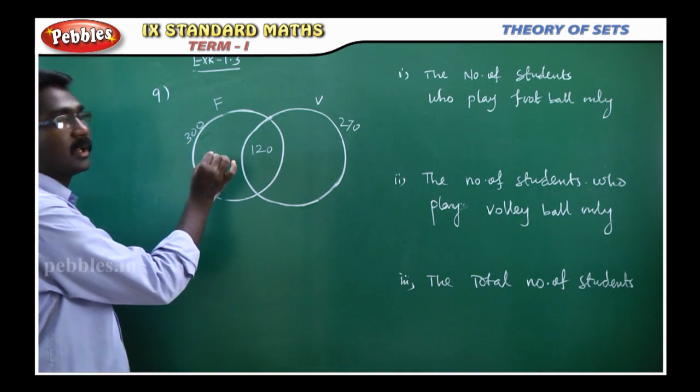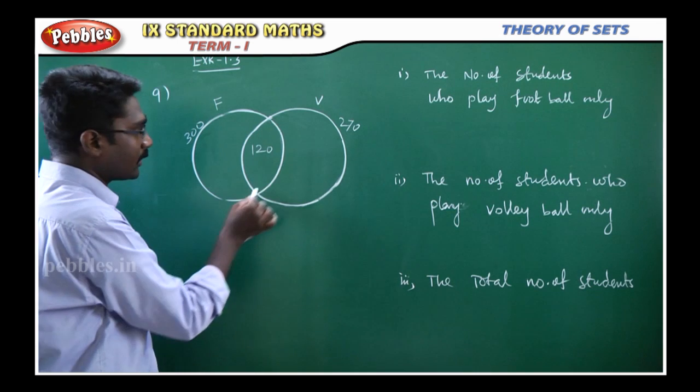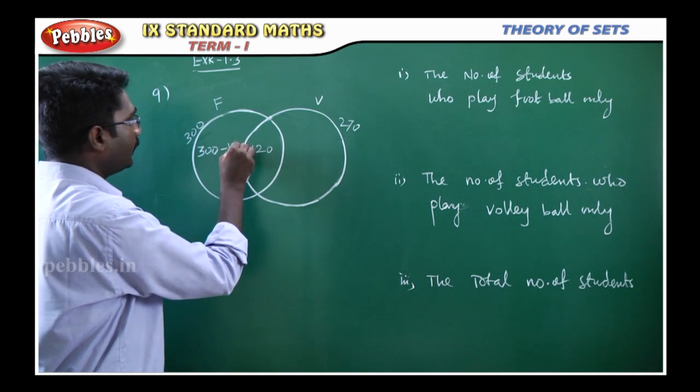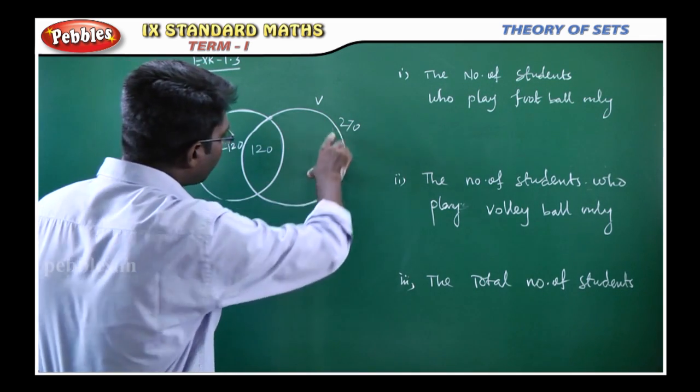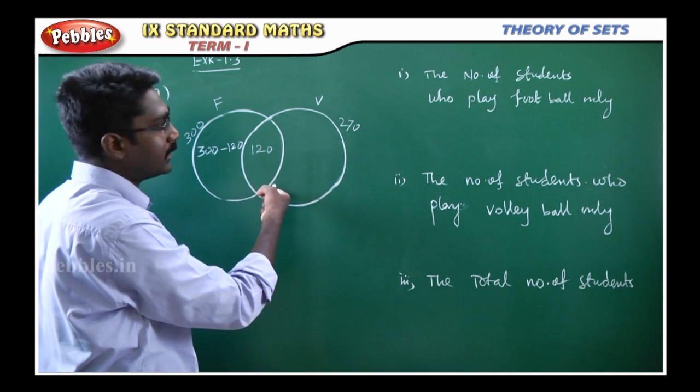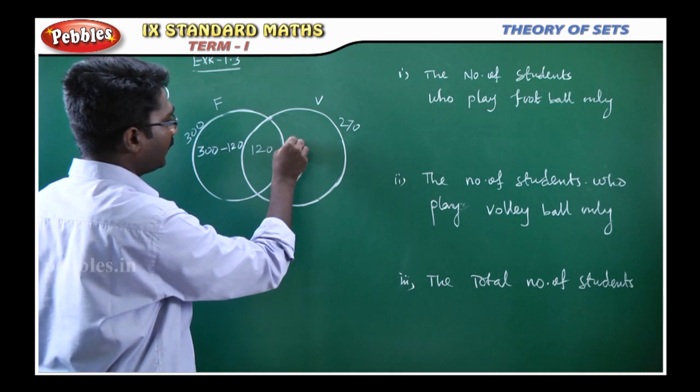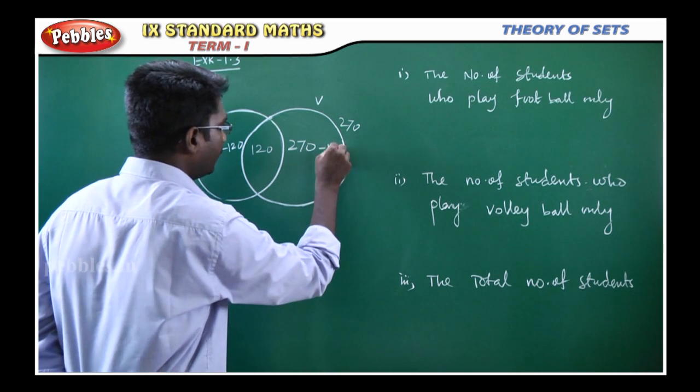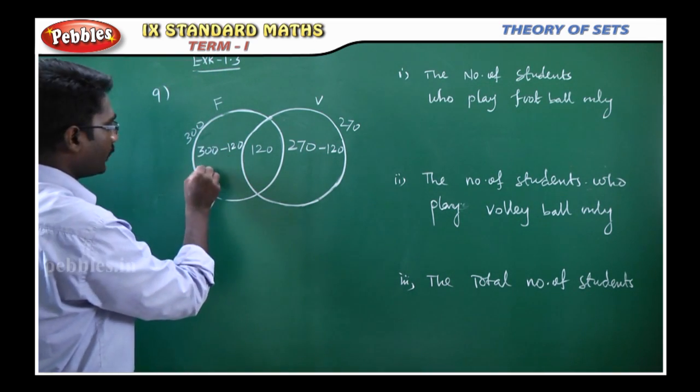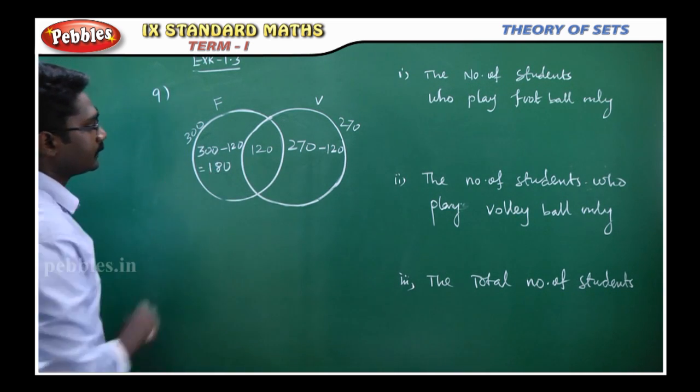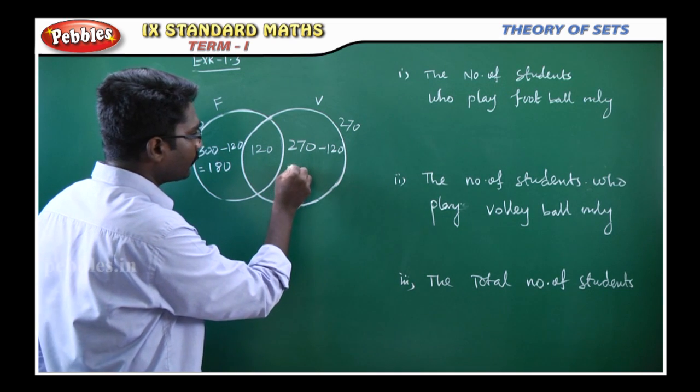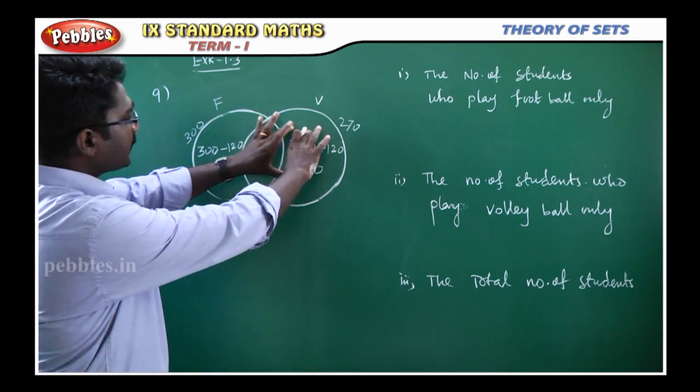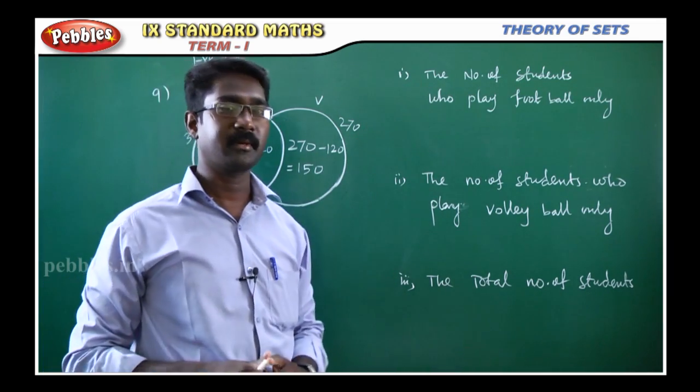So 300 is in the circle for football, but only football. So 300 minus 120, because 120 is in the middle. 300 minus 120 equals 180. Similarly, only volleyball: 270 minus 120, so 270 minus 120 equals 150.